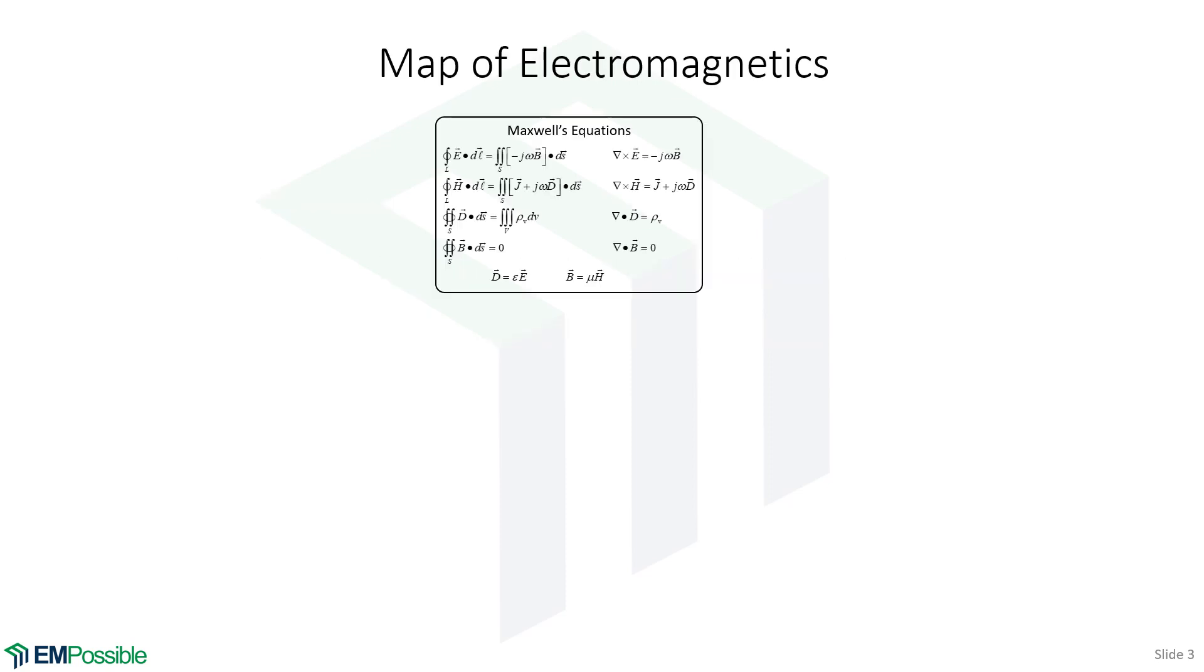So let's map this course. It all starts with Maxwell's equations. Everything in this course will come out of Maxwell's equations and the constitutive relations, and a little bit later one other equation called the Lorentz Force Law. Maxwell's equations, the constitutive relations, and the Lorentz Force Law describes all of classical electromagnetics. Here's a map of how all of that comes out of this.